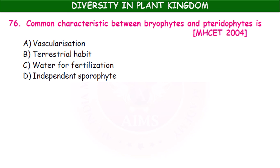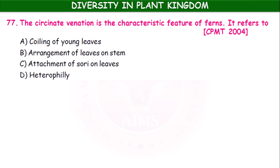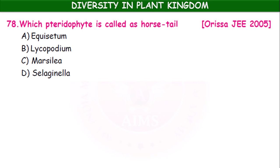The common characteristic between bryophytes and pteridophytes is that water is required for fertilization. Circinate venation is the characteristic feature of ferns. It refers to the coiling of attachment to sori on leaves. This type of venation is called circinate venation and is a characteristic feature of ferns or pteridophytes.